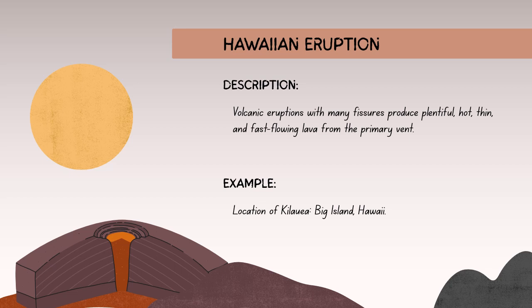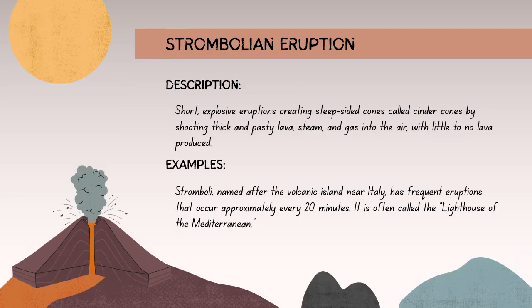Hawaiian volcanoes are known for relatively frequent eruptions with activity being more continuous and less explosive compared to other types. The Strombolian eruption is a type of volcanic activity characterized by frequent, moderate explosions. These eruptions involve the ejection of incandescent cinder, ash, and volcanic gases, creating bursts or fountains of lava. Strombolian eruptions are named after the volcano Stromboli in Italy, where this type of activity is frequently observed.